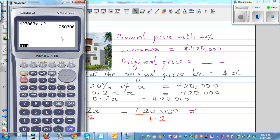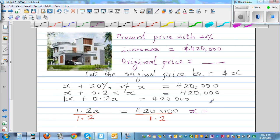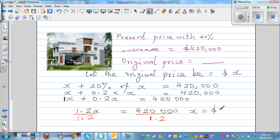The original price was $350,000. It has increased by 20%. Let's check the answer. 10% of $350,000 is $35,000, so 20% is $70,000.